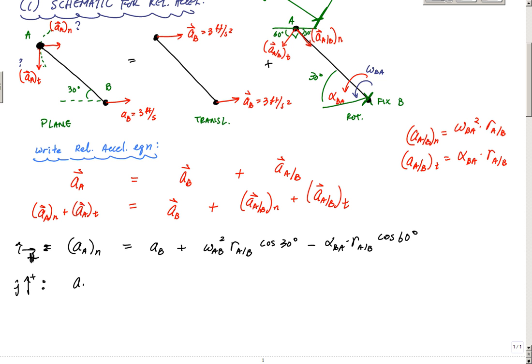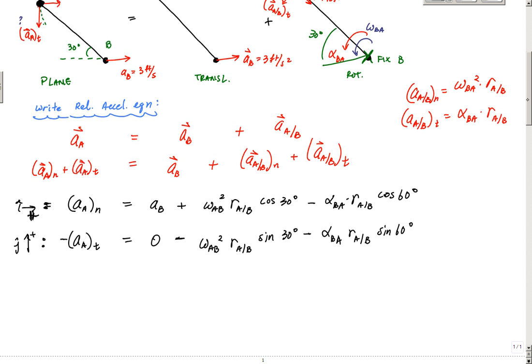In the vertical direction, I have negative AAT because I drew AAT going downwards, equals zero plus omega AB squared RAB sine 30 degrees minus alpha BA RAB sine 60 degrees. I made an itty-bitty mistake; this should be negative because AABN is pointing downwards and I said positive is upward. With all my sign conventions, I have everything.